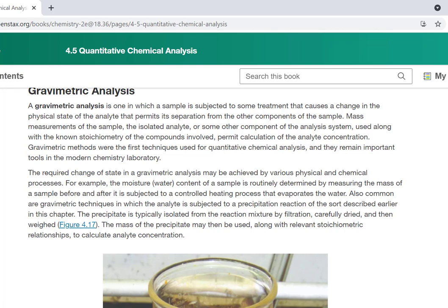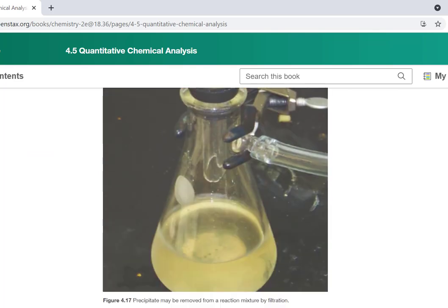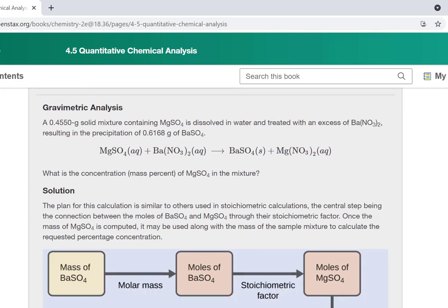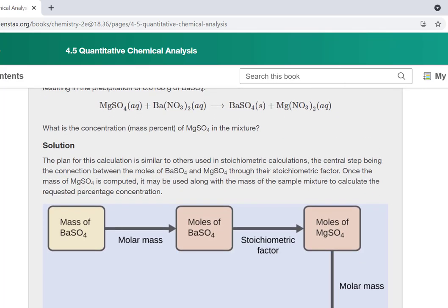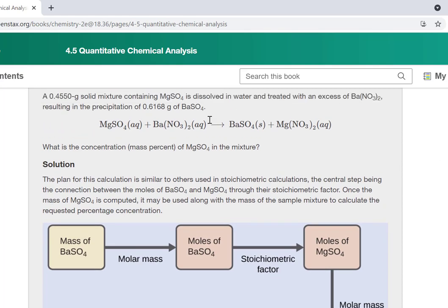So that's called a gravimetric analysis, and here's an example of gravimetric analysis calculation. You'll notice that here you're given a mass to start with and you're given a mass at the end that you found, and so you'll be doing some stoichiometry here. And then because you're given two masses in this case, you'll be finding a percent yield.